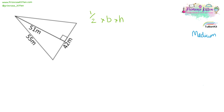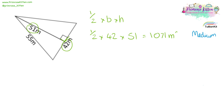Same equation. Here is our right angle — we need this number and we need this number. A half times 42 times 51 equals 1,071 metres squared.